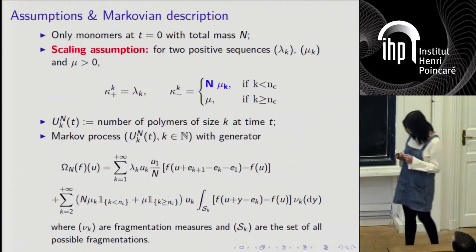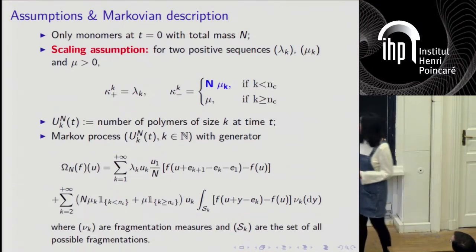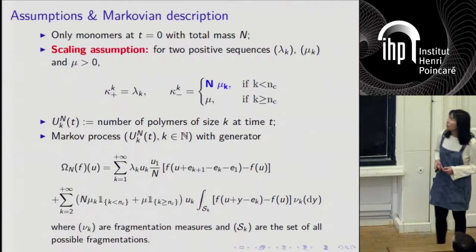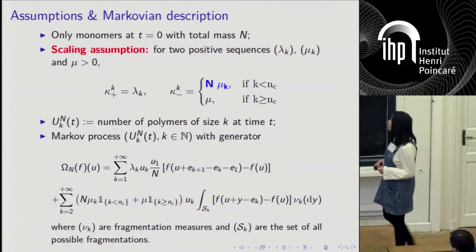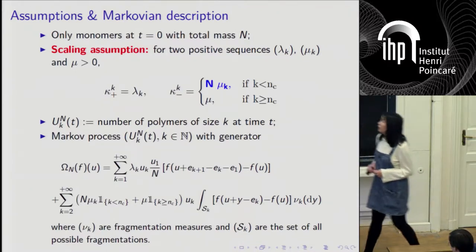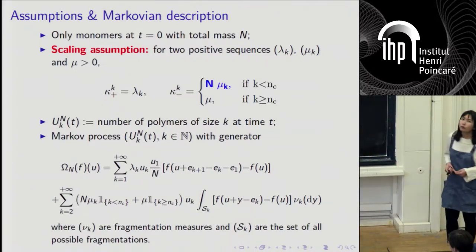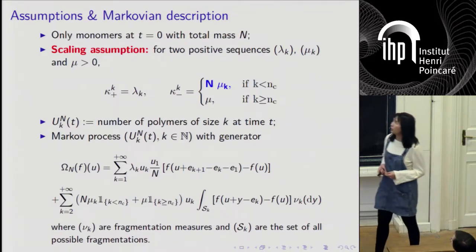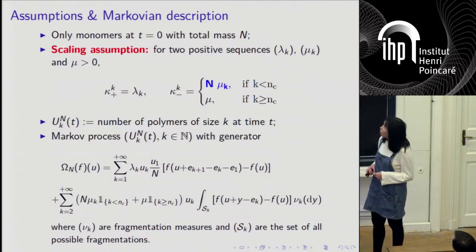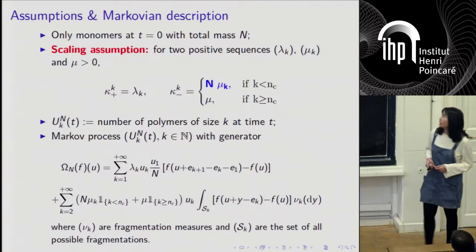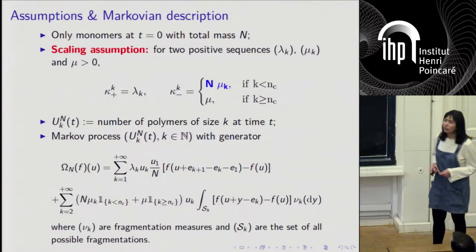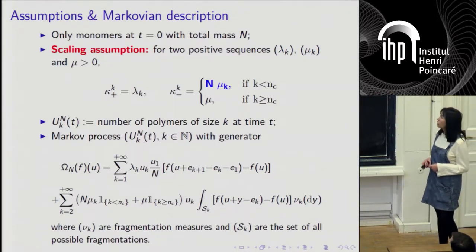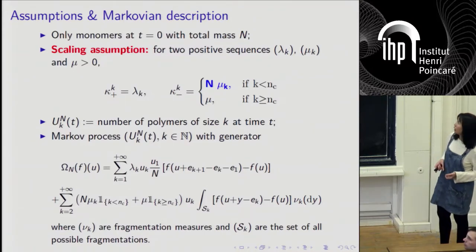In order to study this model, we introduce a scaling parameter. Initially there are only monomers. We assume that the total mass is N. The scaling assumption is on the fragmentation rates. We are assuming that all these coagulation rates are in the order of one. But for the smaller clusters, the fragmentation rate is linear with respect to N, and for the larger polymers, the breakdown rate is also in the order of one.